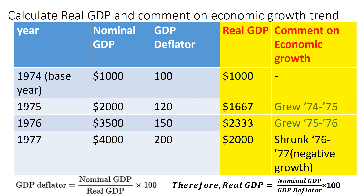From that formula, we find real GDP to be nominal GDP over GDP deflator times 100. Once we calculate that, if real GDP increased year to year, there is economic growth. If there is a decrease in real GDP from year to year, then the economy shrunk or experienced negative growth.